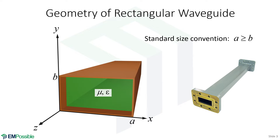A Rectangular Metal Wave Guide is formed by conductive metal in a rectangle shape, with some medium inside having permeability mu and permittivity epsilon. The dimensions A and B refer to the inside dimensions. By convention, A is greater than B — if B were ever greater than A, just rotate the problem 90 degrees. A typical metal wave guide can be found sitting around in a lab.